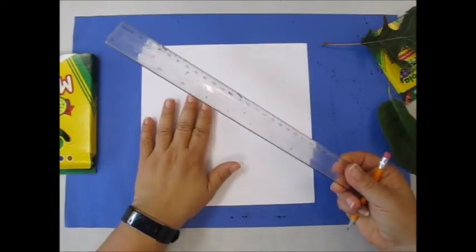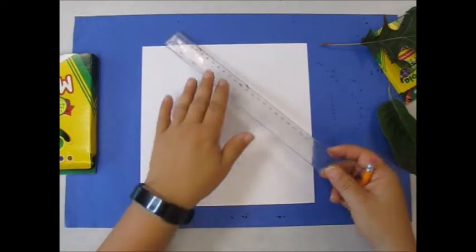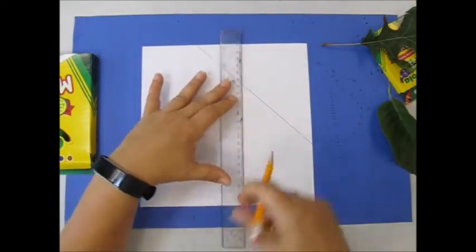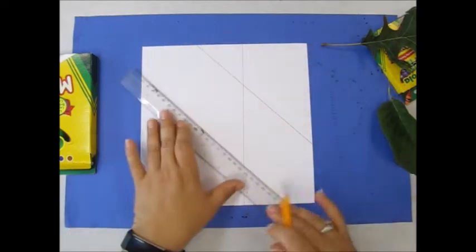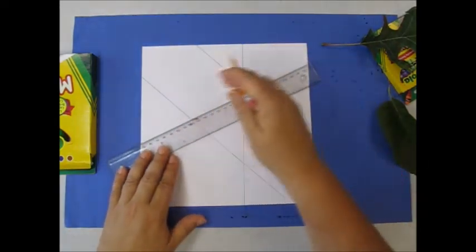You're going to take your ruler and you're going to draw four lines across the paper any way you want to. One, two, three, four.